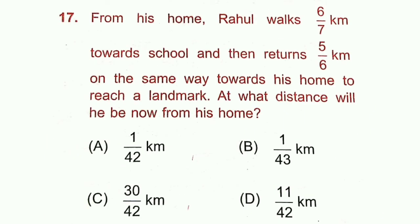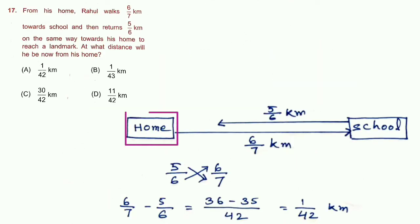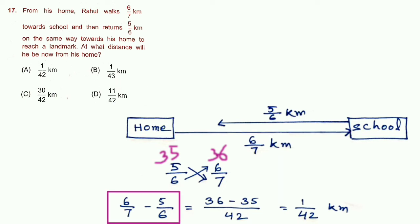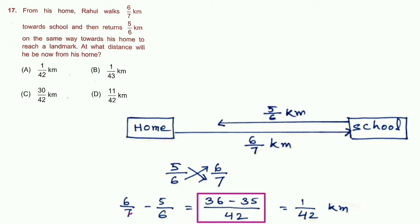Question 17: From home, Rahul walks 6/7 km towards school, then returns 5/6 km on the same path towards home. How far is he from home? Since 6/7 > 5/6, subtract: 6/7 − 5/6. Common denominator 42: 36/42 − 35/42 = 1/42. Rahul is 1/42 km from his home. Option A is correct.